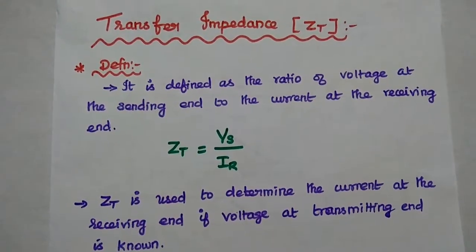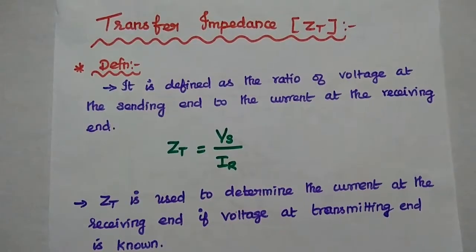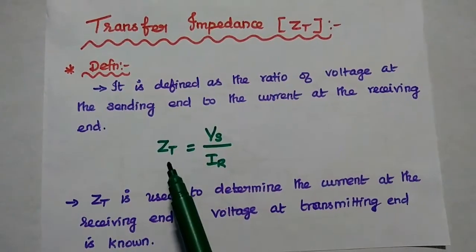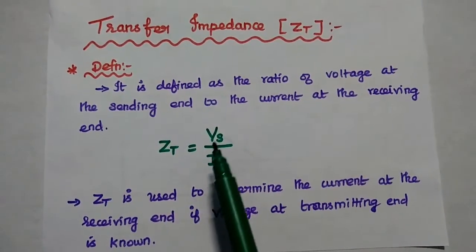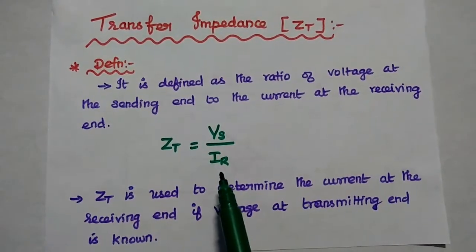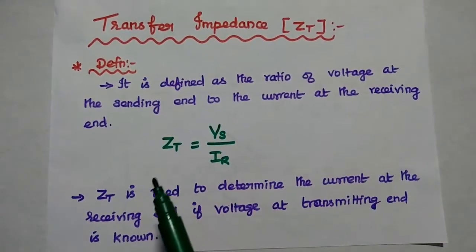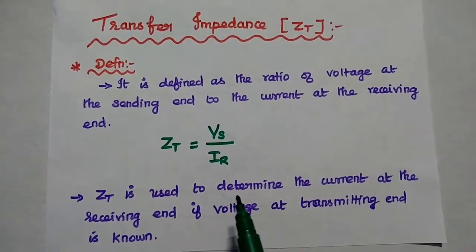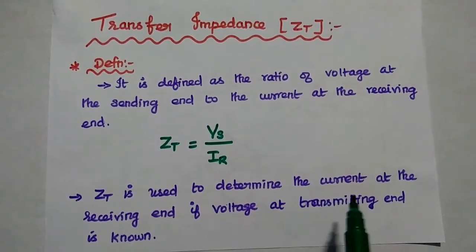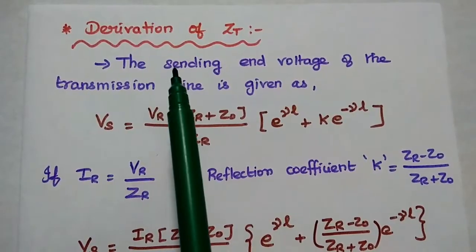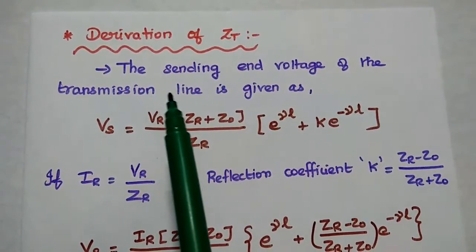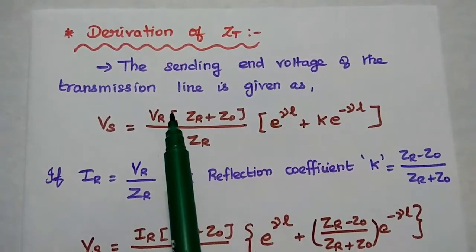Next is transfer impedance. It is defined as the ratio of voltage at the sending end to the current at the receiving end. It is denoted as ZT, which is equal to Vs divided by IR, where Vs is the sending end voltage and IR is the receiving end current. Transfer impedance is widely used to determine the current at the receiving end when the transmitting voltage is known. Now we are going to derive the transfer impedance.